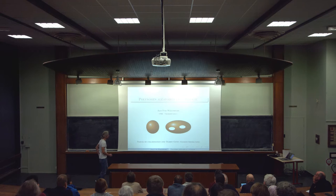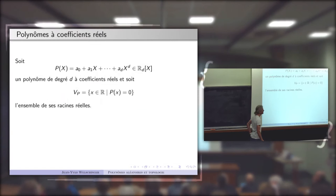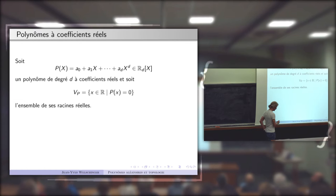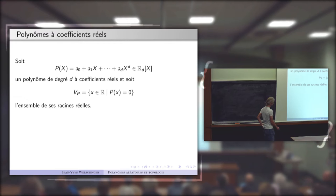Je voudrais commencer par le début. Si vous considérez un polynôme simplement à une variable, de degré d, à coefficient réel, je note P le polynôme et j'introduis l'ensemble des racines, V indice P, l'ensemble des racines réelles.